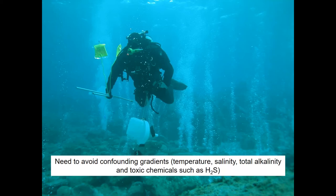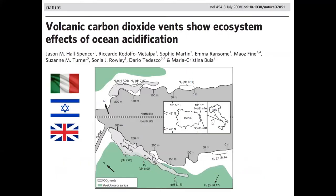It is certainly possible to control for those confounds — you can measure the amount of metals in the seabed sediments and avoid those areas when looking at the effects of high CO2. This is the first study that used natural analogues of high CO2 to investigate the ecological effects of ocean acidification.